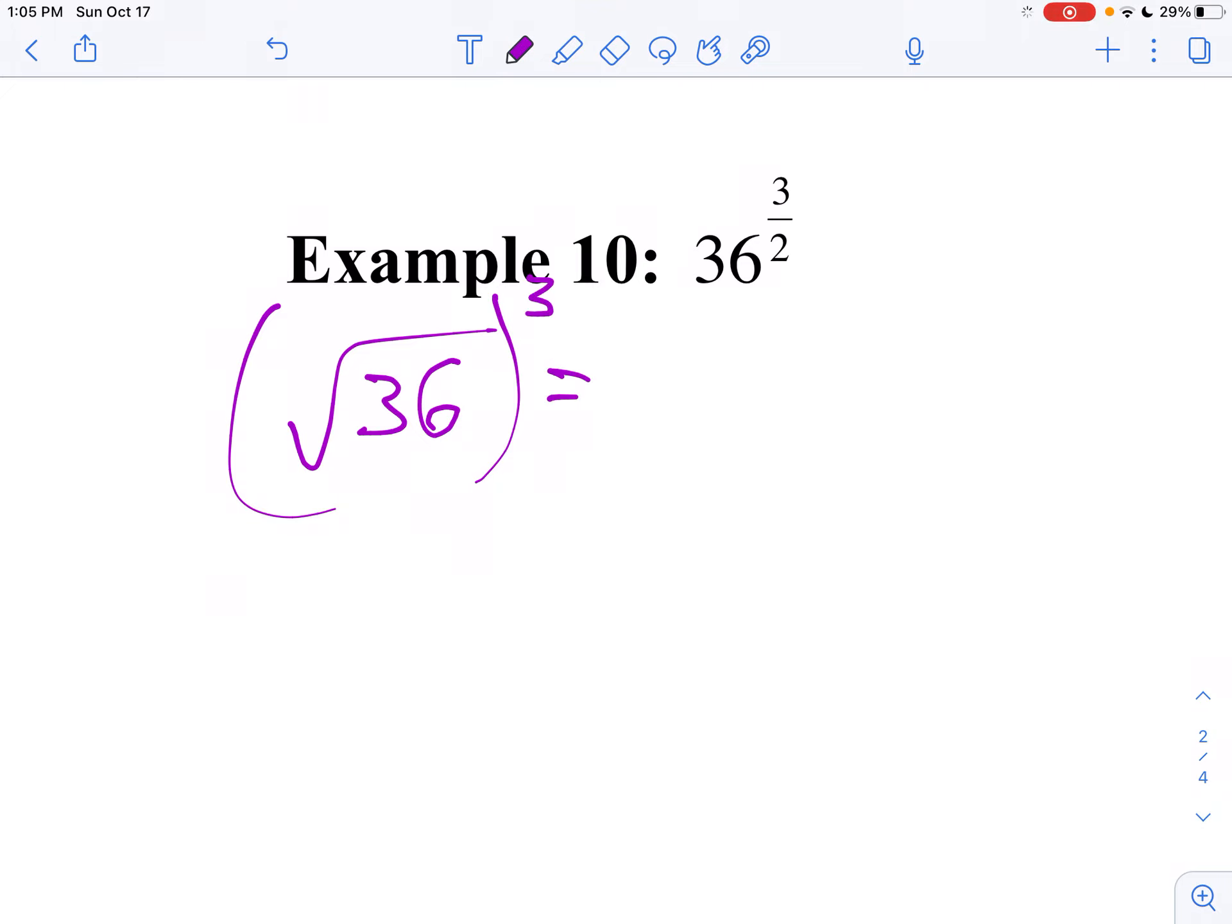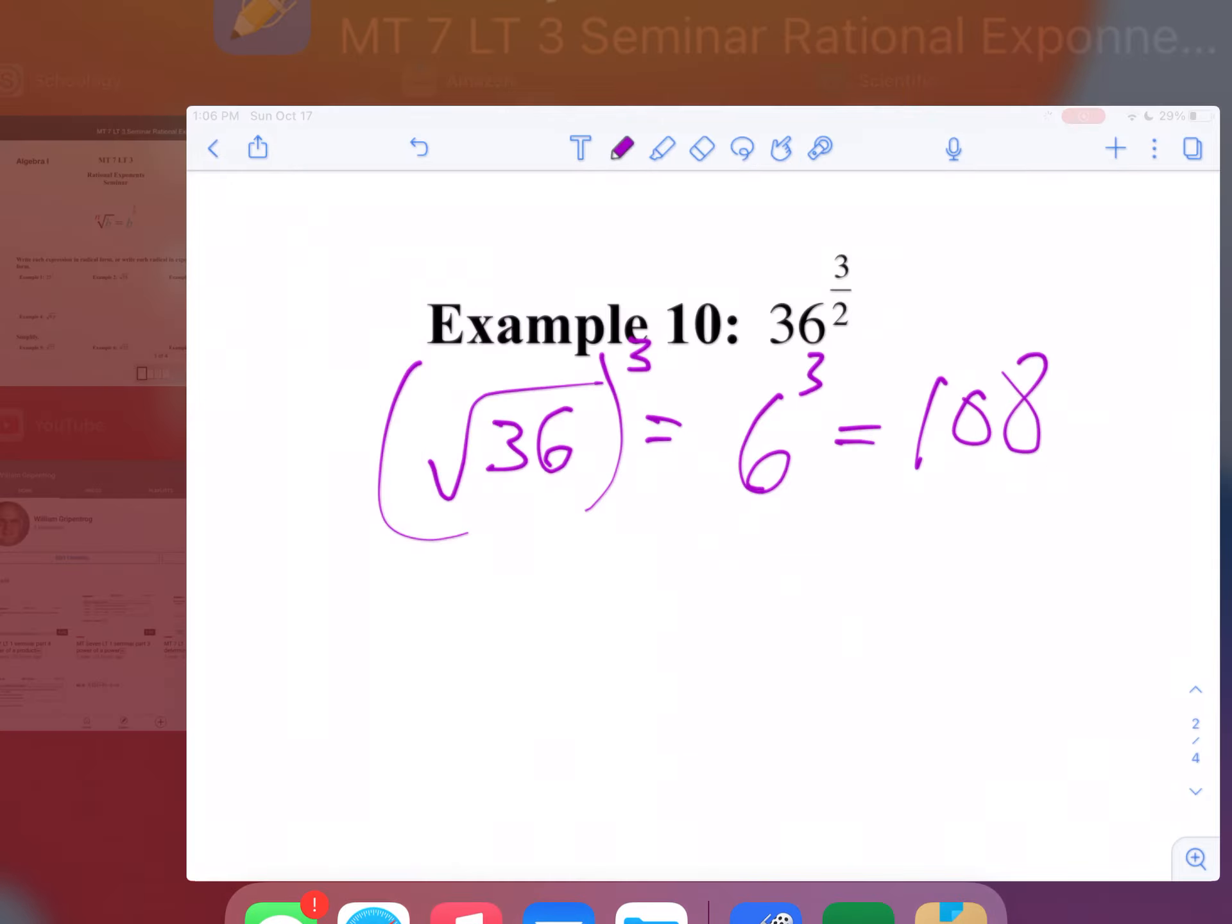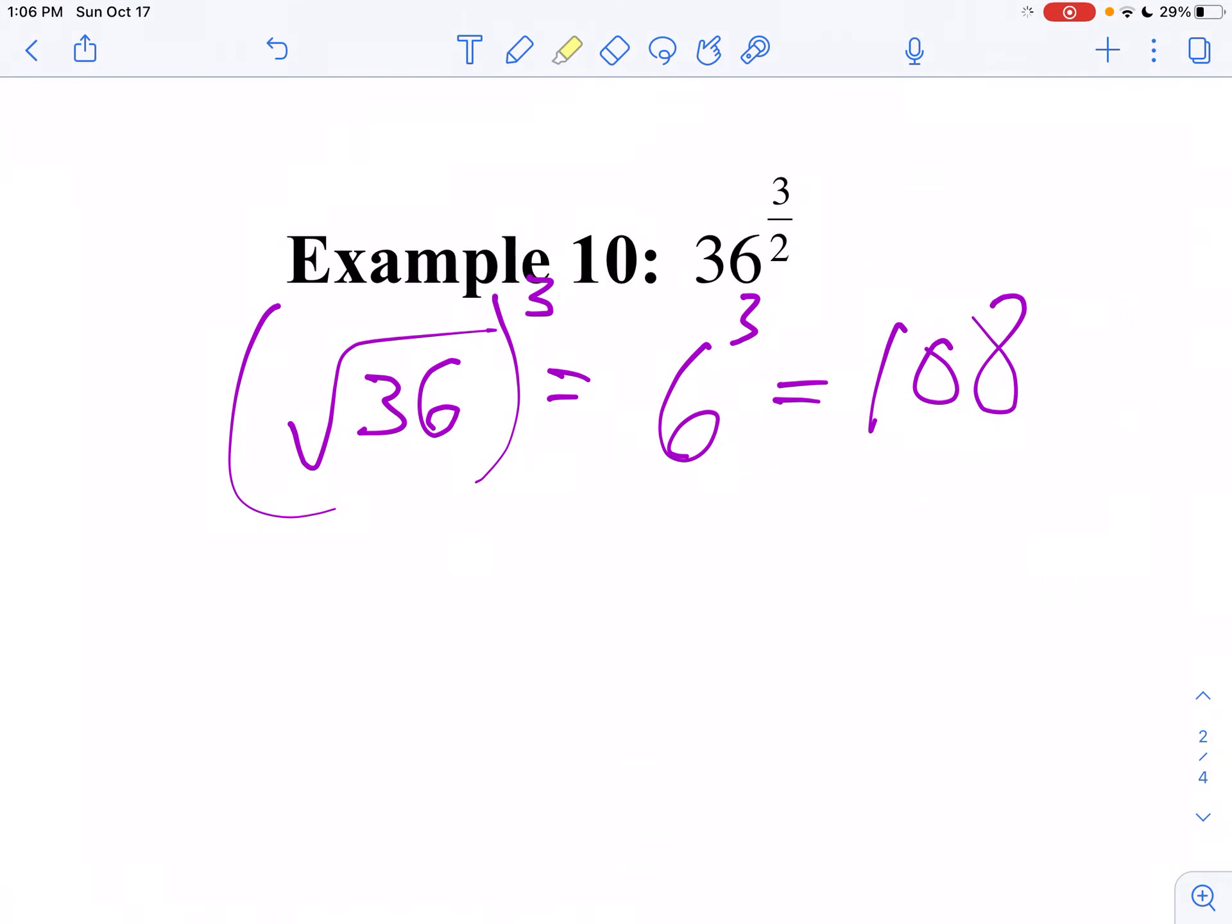Well the square root of 36 is 6, I cube that, I do believe that is 108. But let's show that on the calculator just to make sure. So if I take 6 to the 3rd power, oh I was wrong, it's 216. I was off by 1.